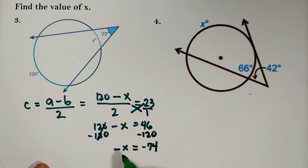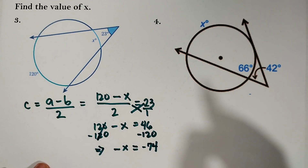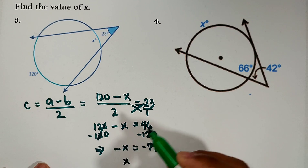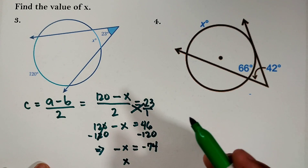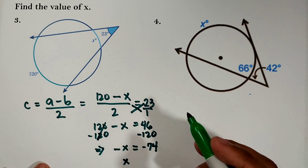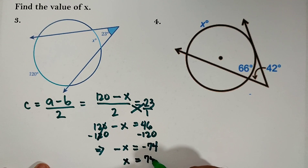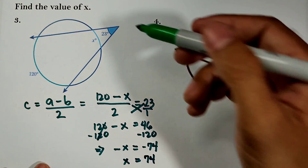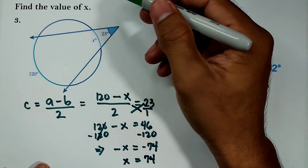Since X is negative, multiply both sides by negative 1. Negative 1 times negative X is positive X, and negative 74 times negative 1 is 74. Therefore, the value of X — the intercepted arc — is 74 degrees.